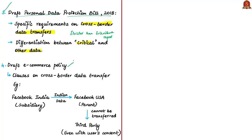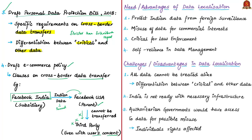For example, Facebook India is a subsidiary of Facebook USA, the parent company. The draft e-commerce policy suggests that personal data of Indian citizens shared to Facebook USA cannot be transferred to a third party with which Facebook USA has some agreement. The draft policy suggests that even if the user's consent has been taken, the data cannot be shared by Facebook USA to a third party. Now, you can think about why India is stressing too much on data localization through these draft proposals.